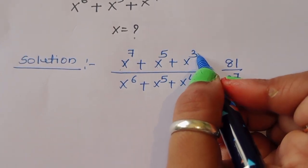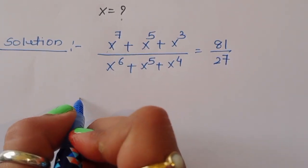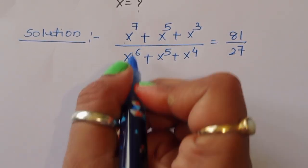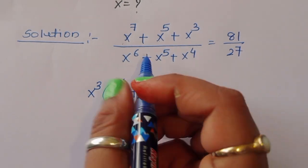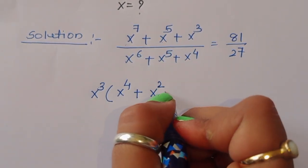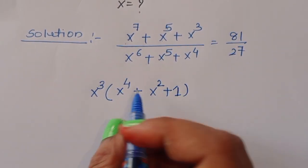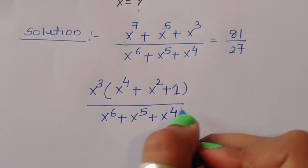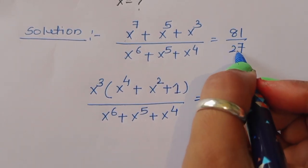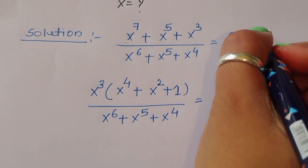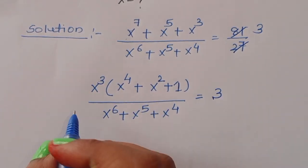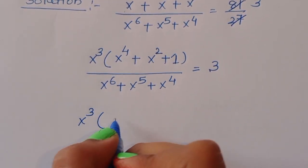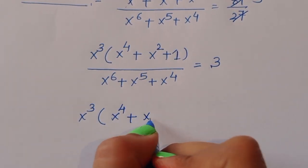In the numerator x⁷ + x⁵ + x³, we can take x³ as common, giving x³ times (x⁴ + x² + 1). And 81 divided by 27 simplifies to 3, so we get 3 times (x⁴ + x² + 1) on the right side.